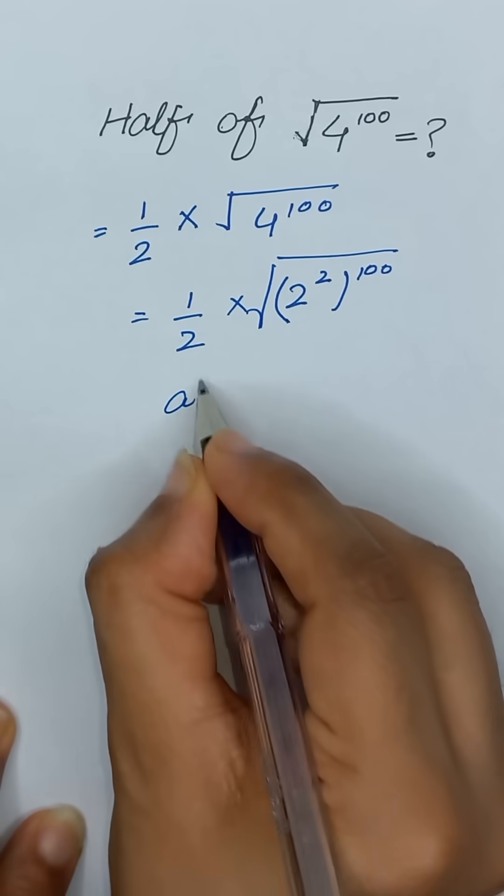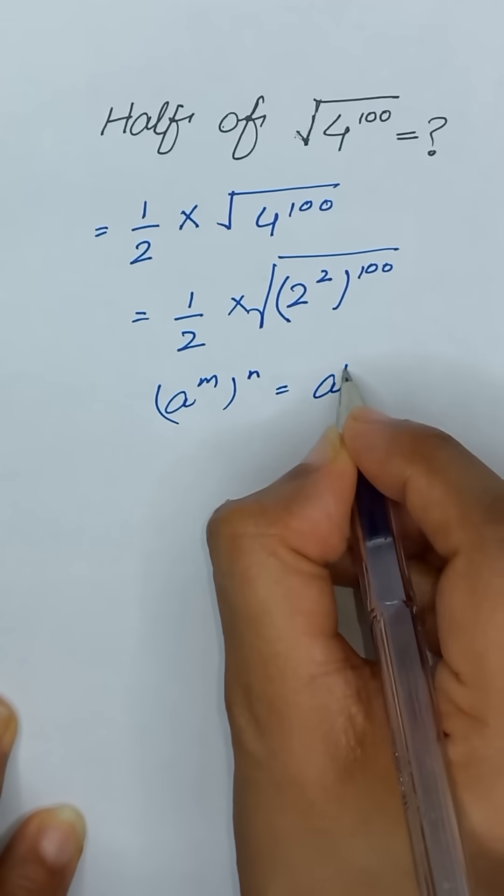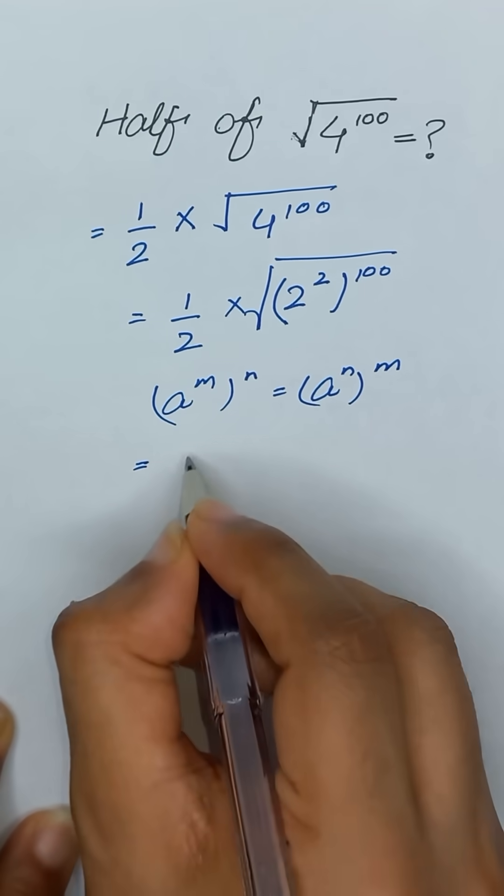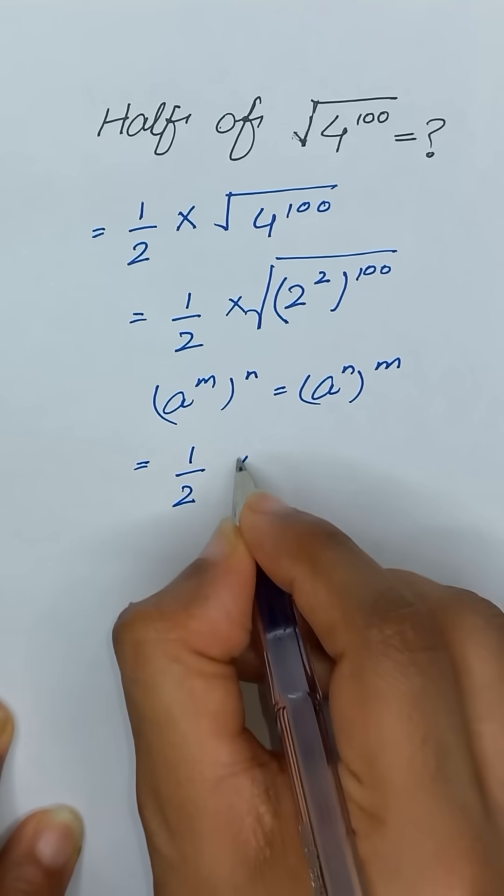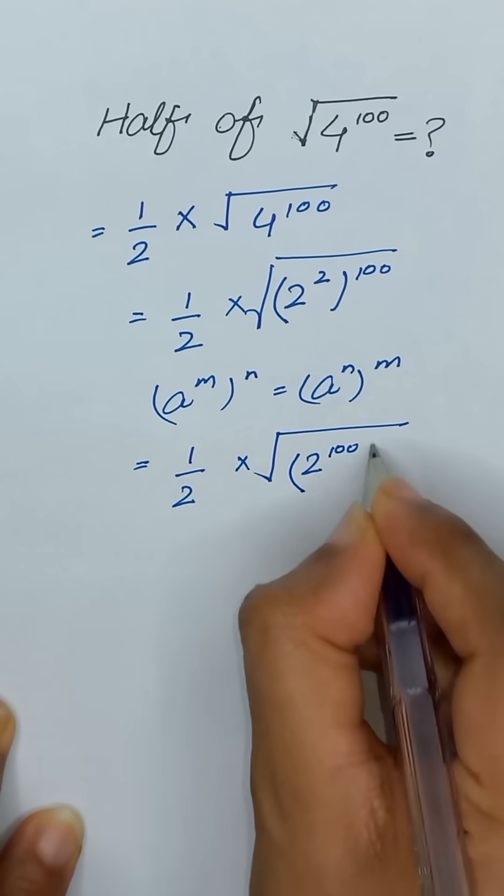As we know that a to the power m whole power n is equal to a to the power m times n. So we can write it as 1 divided by 2 times square root of 2 to the power 100 and its square.